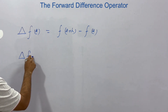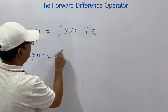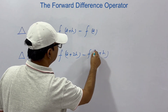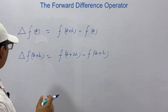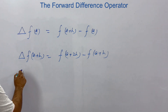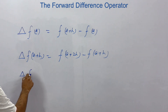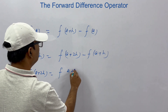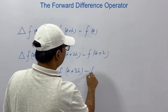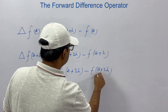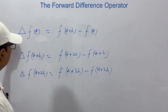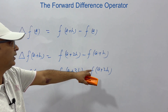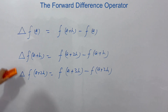We can write the second difference as f(a+2h) minus f(a+h). Similarly, del of f(a+h) is equal to f(a+3h) minus f(a+2h). This goes on. If this is a+nh, this will be f(a+(n+1)h) minus f(a+nh). So this is the forward operator. I'm giving you a revision of what we have already learned.